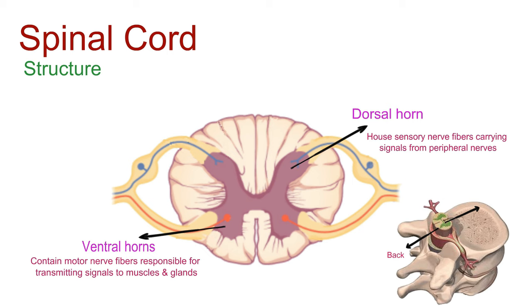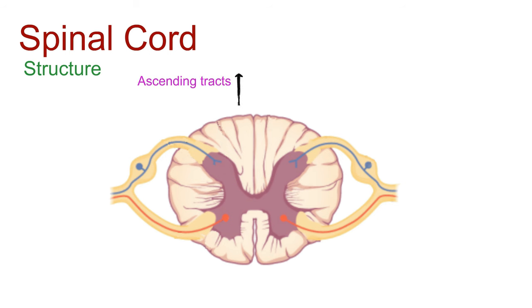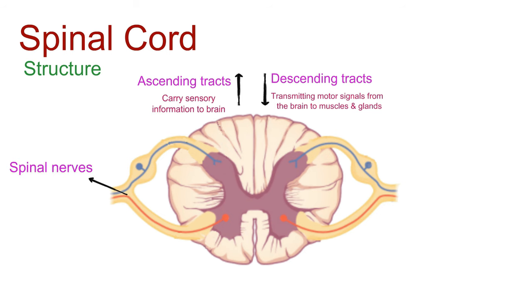Between the dorsal and ventral horns lies the intermediate zone. This area is involved in autonomic functions and the coordination of reflexes. The white matter includes ascending tracts carrying sensory information to the brain and descending tracts, transmitting motor signals from the brain to muscles and glands. Spinal nerves emerge from the spinal cord, carrying both sensory and motor fibers. Dorsal roots contain sensory fibers, while ventral roots contain motor fibers.